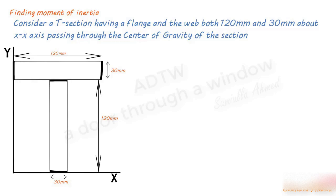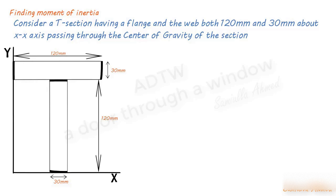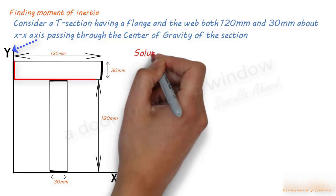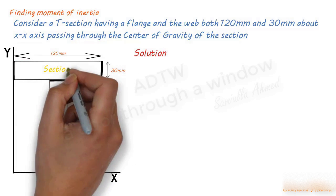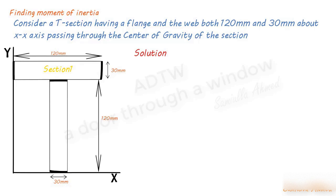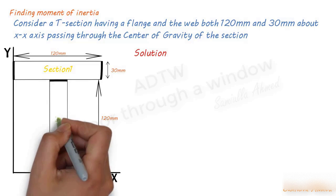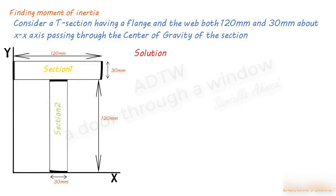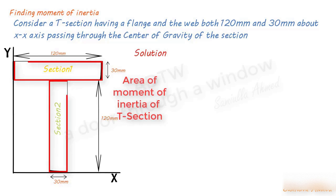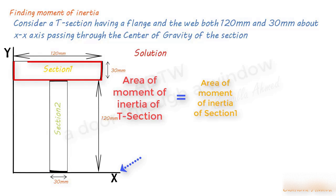Here our intention is to find out the moment of inertia of the T-section about the X-axis and Y-axis. To find that, we first need to find the moment of inertia about the X-axis and Y-axis of the flange, which I name as Section 1, and the moment of inertia of the web, which I name as Section 2. The moment of inertia of the T-section about the X-axis is the sum of the moment of inertia of Section 1 and Section 2 about the X-axis.